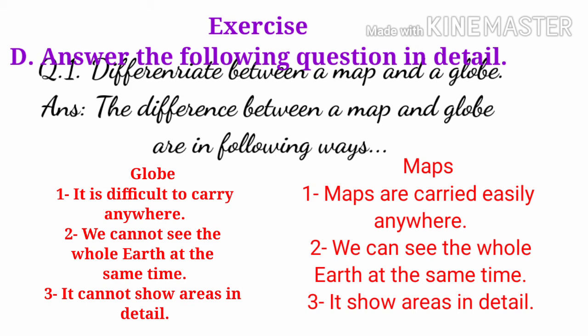Third point. Globe: it cannot show areas in detail. Map: it shows areas in detail.